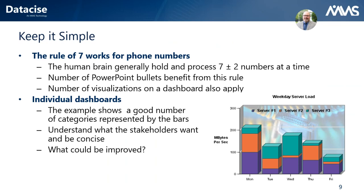There is a rule of thumb: seven plus or minus two. People can generally remember up to seven items — the same rule used for phone numbers. It's also the same rule used in presentation training: no more than seven bullets, plus or minus two. Try to keep that in mind when developing your dashboards. For example, a weekday server load chart with five categories is a good number of categories, but watch out for 3D effects and cluttered backgrounds — keep it simple, go to two dimensions, and use clear colors.